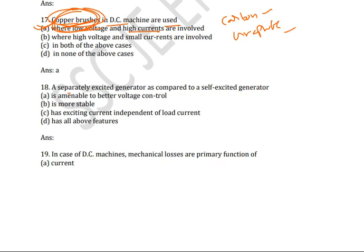Next question: a separately excited generator as compared to a self-excited generator — is amenable to better voltage control, is more stable, has exciting current independent of load current, or all of the above? The correct answer is all of the above features. A separately excited generator provides better voltage control, greater stability, and its excitation current is independent of load current.